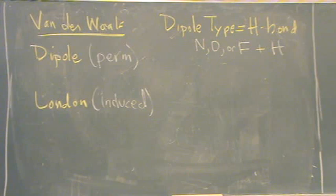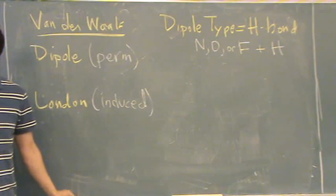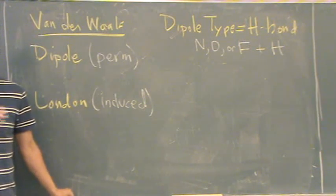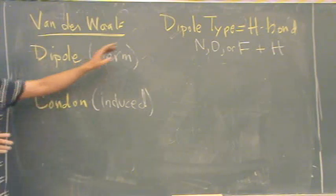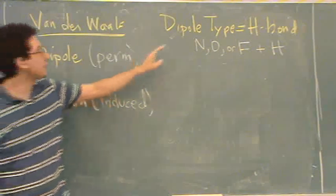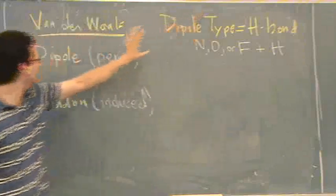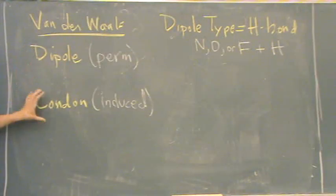So those are the three types. There's a couple things you'd want to do with these. First of all, identification. So any molecule, you'll need to know which one of the three types it is. Because you need to know this is the strongest, next strongest is dipole, and the weakest is London.